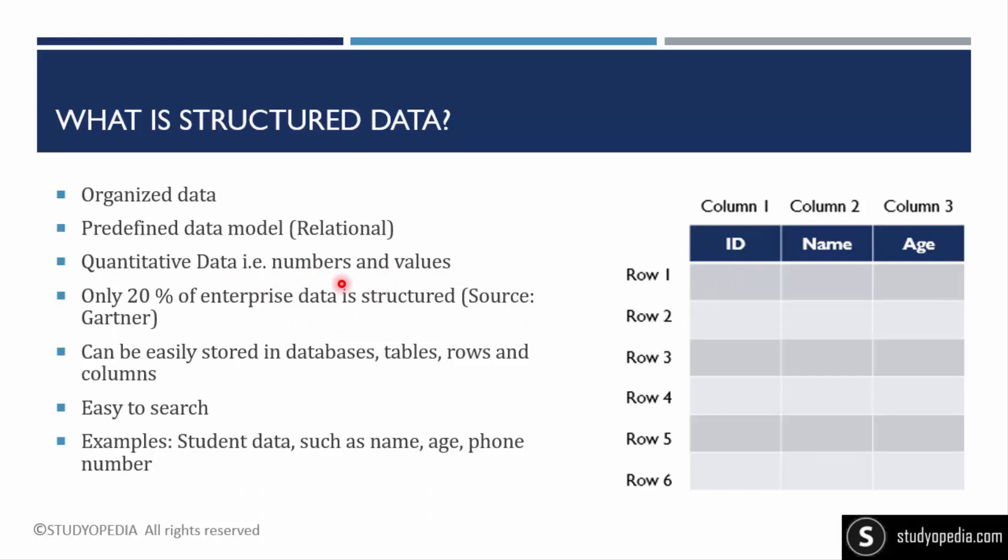It includes numbers and values—quantitative data. Structured data is quantitative data. Right now, only 20% of enterprise data is structured and 80% is unstructured, so you can see the need to manage unstructured data is very required. Structured data can be stored in databases, tables, rows, and columns. It is easy to search. Let's say I told you to search a name, Amit, inside a dataset, a table with a hundred rows—you can easily search it. Examples include student data, college data, company data with the name of employees, age, phone number, address, and their department.